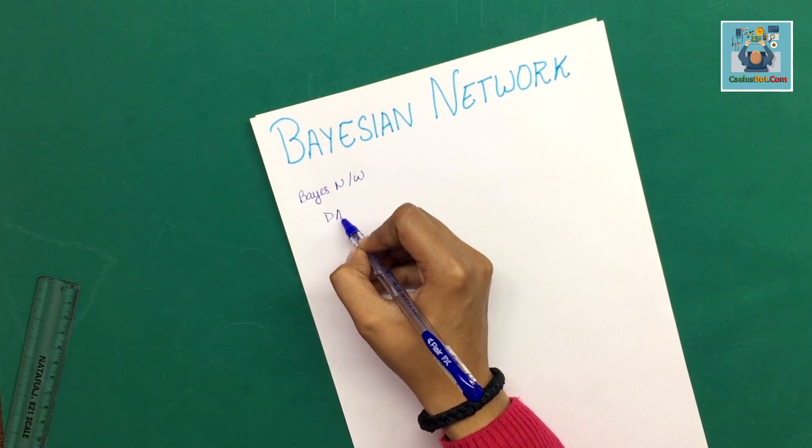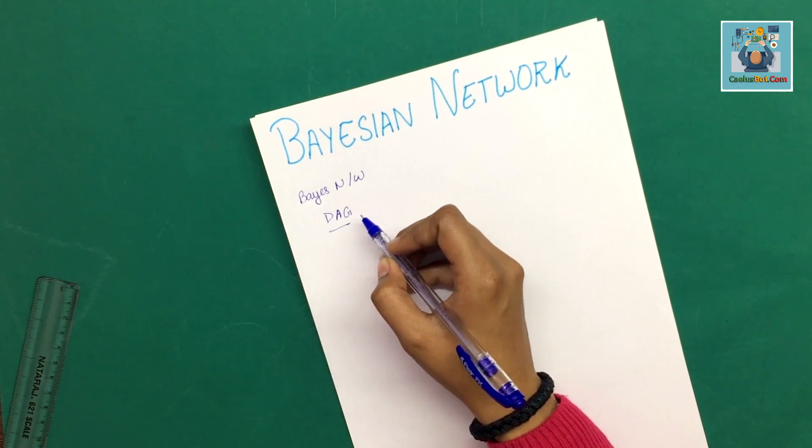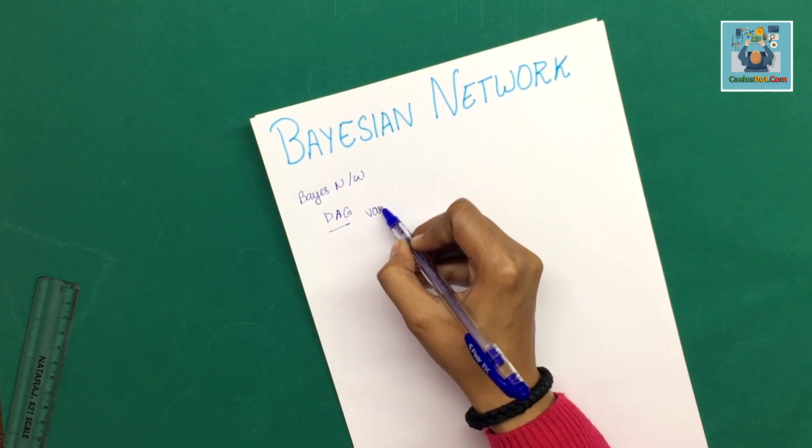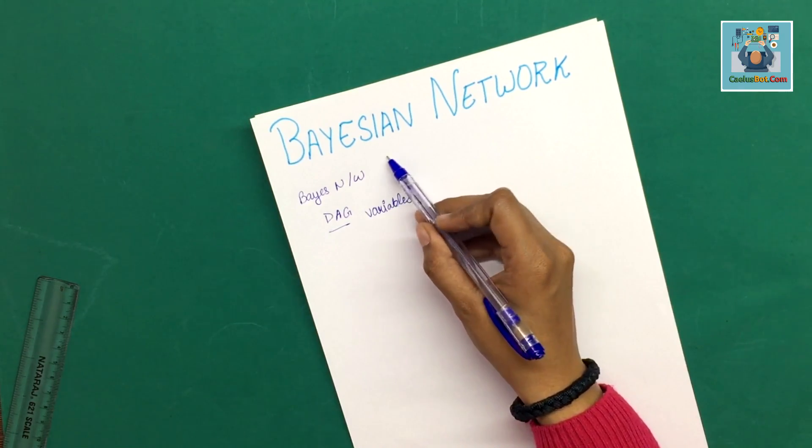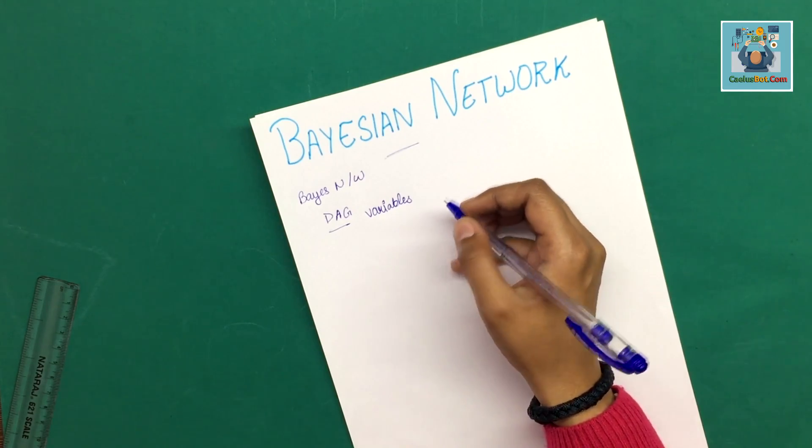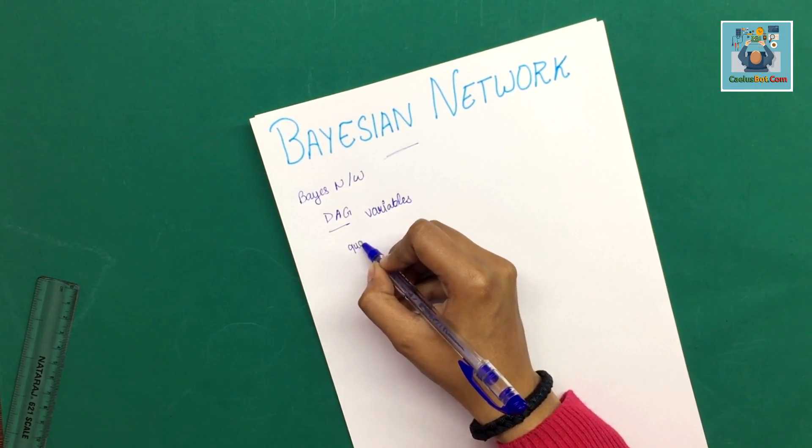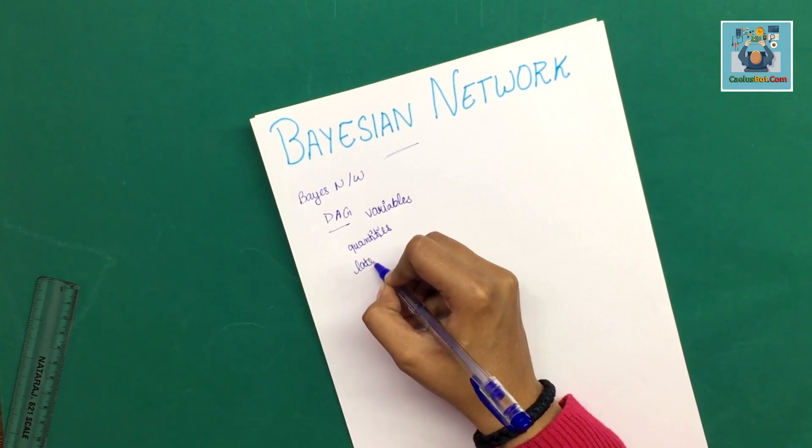In Bayesian Network, we have a directed acyclic graph whose nodes represent variables. These variables can be observable quantities, latent variables, unknown parameters, or hypotheses.